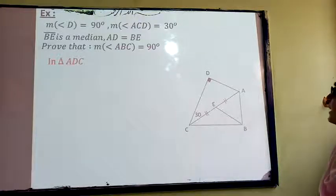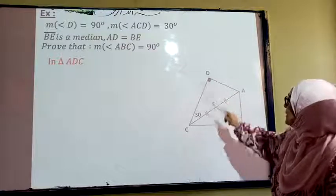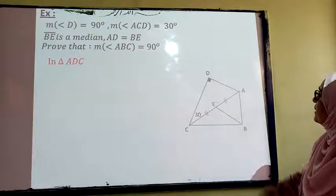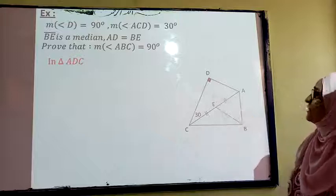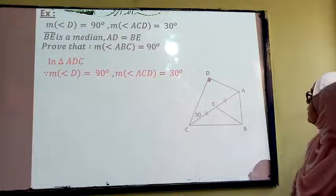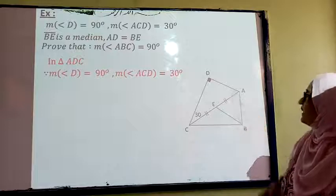Now let's go to the triangle ADC. This triangle. This is a 30-60 degree triangle. Therefore, AD equals half AC.